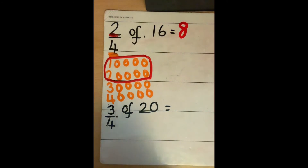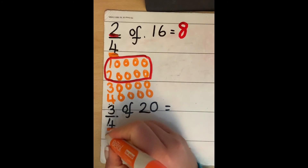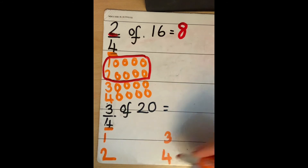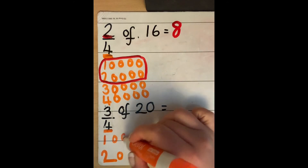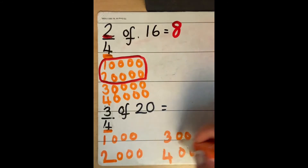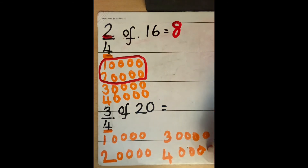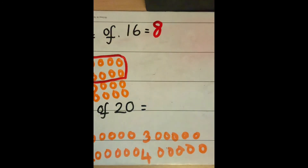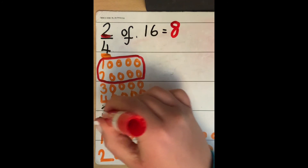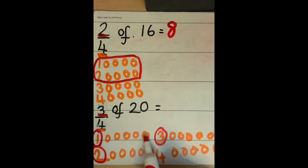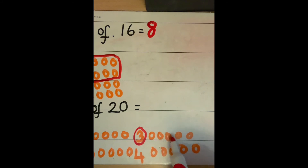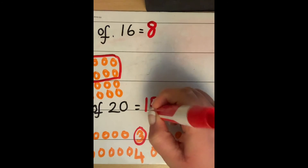Now let's move on to our last one. This one says 3 quarters of 20. Our denominator is 4, so we need 4 groups. We need to split 20 equally between those 4 groups, counting out all 20. This time our numerator is 3, so I need to count 3 of those groups. Counting all three groups gives us 15. So 3 quarters of 20 is 15.